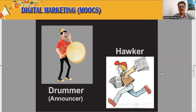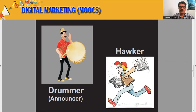On this slide we can see two different pictures. On the left side, the person is an announcer — he is announcing something with the help of a musical instrument, a drum. This person is known as a drummer. By hitting or playing the drum, he attracts the attention of the audience and then gives some information about an activity, event, or product. This is one way to communicate with customers or the audience.